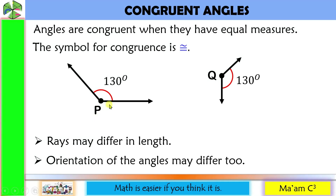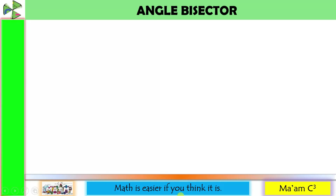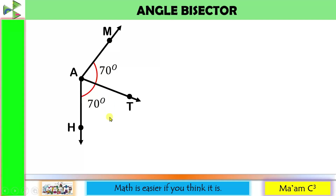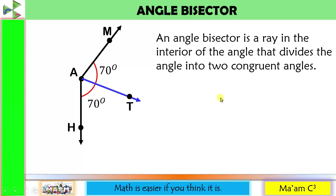In symbol, we can say that angle P is congruent to angle Q. We also have what we call an angle bisector. Consider this angle — it measures 140 degrees. Adding a ray inside this angle divides 140 degrees into two equal measures. Each angle now measures 70 degrees. This ray is called the angle bisector. It is a ray in the interior of the angle that divides the angle into two congruent angles. Now we can say that angle MAT is congruent to angle TAH.